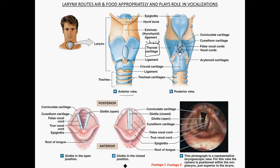Another important piece of cartilage is the cricoid cartilage, which is ring-shaped — it goes all the way around. In this posterior view, the cricoid cartilage forms a complete 360-degree circle around the larynx. The thyroid cartilage, in contrast, does not go all the way around; there is an open space posteriorly where the esophagus would be. The esophagus has been removed in this posterior view.